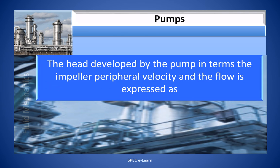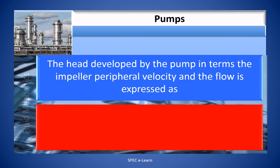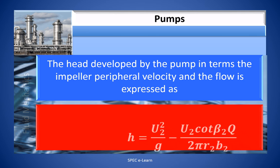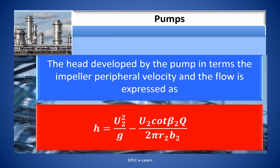The head developed by the centrifugal pump in terms of the impeller peripheral velocity and the flow is expressed as: H = U2² / g − (U2 · cot β2 · Q) / (2π · R2 · B2), where H is the head rise, Q is the volumetric flow rate, U2 is the peripheral tip velocity of the blade outlet, R2 is the impeller radius, β2 is the blade outlet angle, and B is the impeller width.